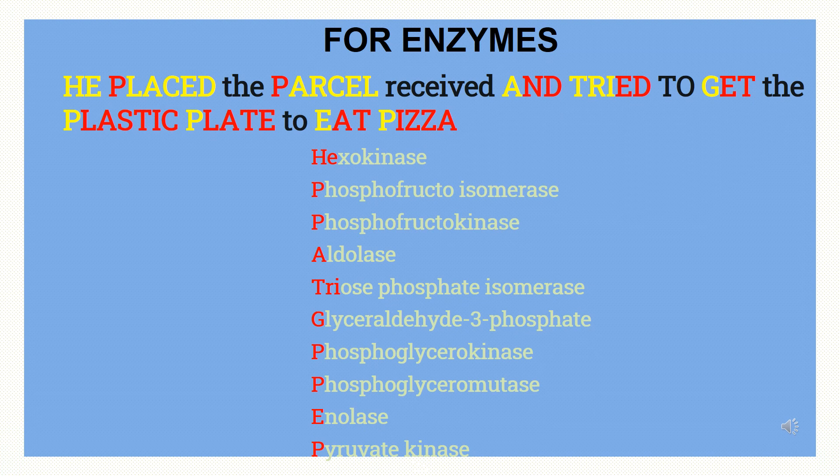Here are the mnemonics for enzymes: 'He plays the puzzle and tries to get the plastic plate to eat pizza.' He = Hexokinase; Plays = Phosphoglucoisomerase; Puzzle = Phosphofructokinase; Tries = Triose-phosphate isomerase; Get = Glyceraldehyde-3-phosphate dehydrogenase; Plastic = Phosphoglycerokinase; Plate = Phosphoglyceromutase; Eat = Enolase; Pizza = Pyruvate kinase.